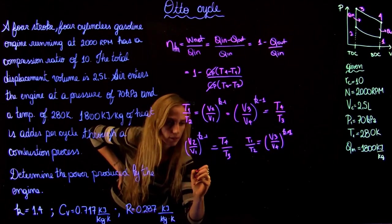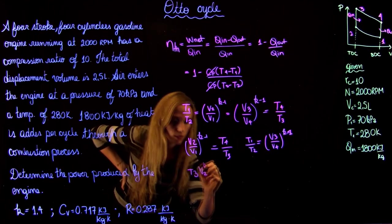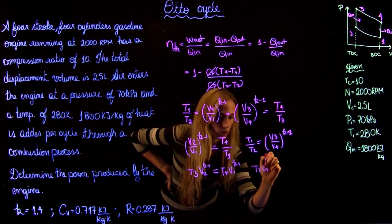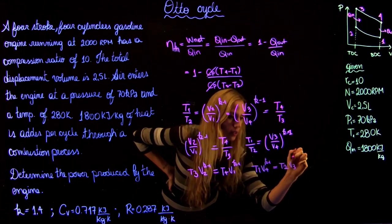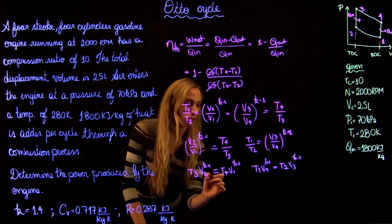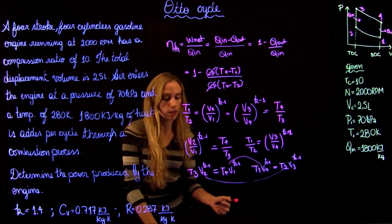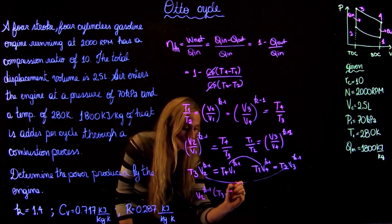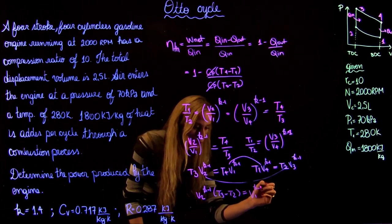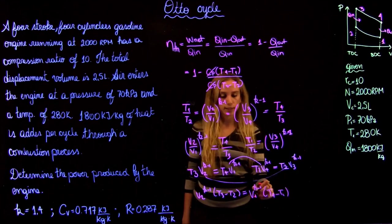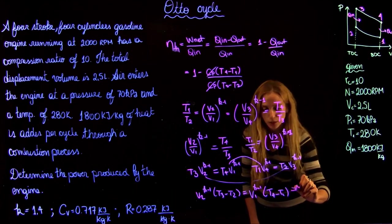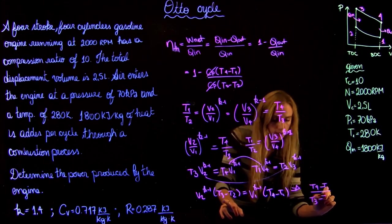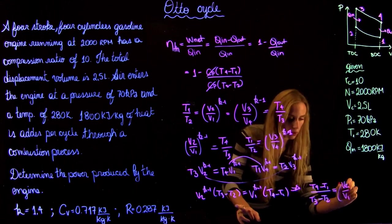Rearranging these isentropic equations: T3 · V2^(k−1) equals T4 · V1^(k−1), and T1 · V4^(k−1) equals T2 · V3^(k−1). Since V2 equals V3 and V1 equals V4, we can combine these to show that V2^(k−1) · (T3 − T2) equals V1^(k−1) · (T4 − T1). This allows us to express (T4 − T1) over (T3 − T2) as equal to (V2 over V1)^(k−1).